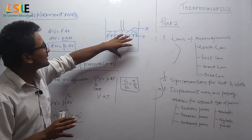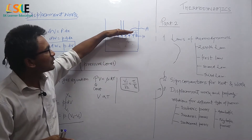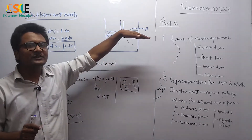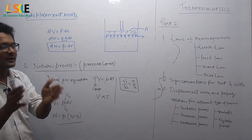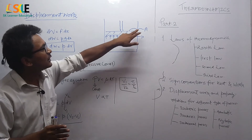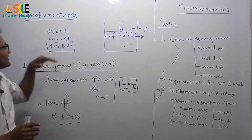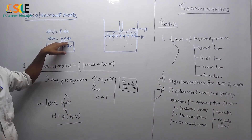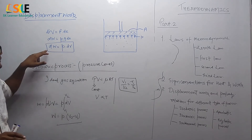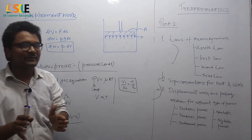We will take an example: there is a piston-cylinder arrangement with gas inside it. The gas exerts pressure on the piston. We consider small pressure p at a small unit area, and the cross-sectional area is capital A. We know the work formula: work equals force into displacement. The force equals pressure into area. When the piston displaces by dx, work equals pressure into area into dx. Replacing area into dx with dV, the work done is p·dV. This is our displacement work.